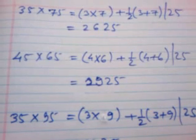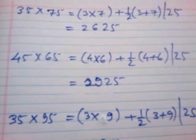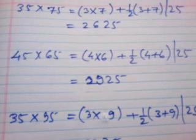This is a simple way of multiplying two numbers having the unit digit 5 in both numbers.